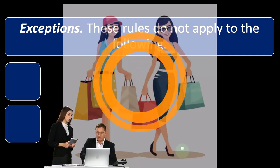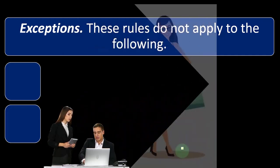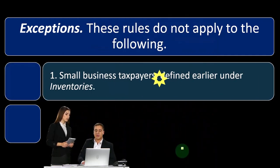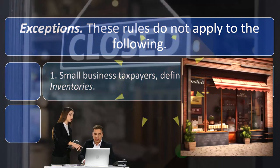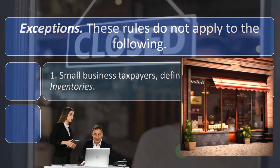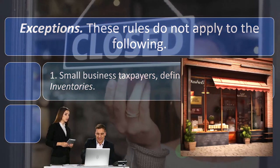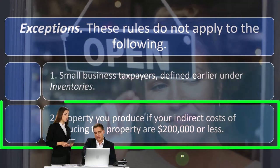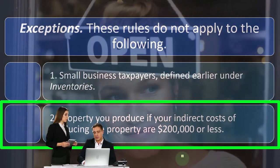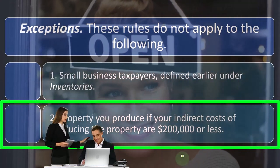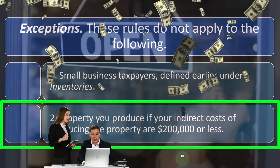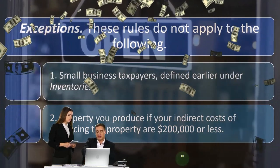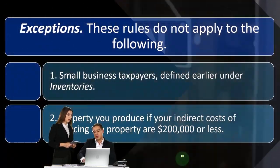So exceptions — these rules do not apply to the following. They don't apply to: one, small business taxpayers defined earlier under inventories; and two, property you produce where your indirect costs of producing the property are $200,000 or less.